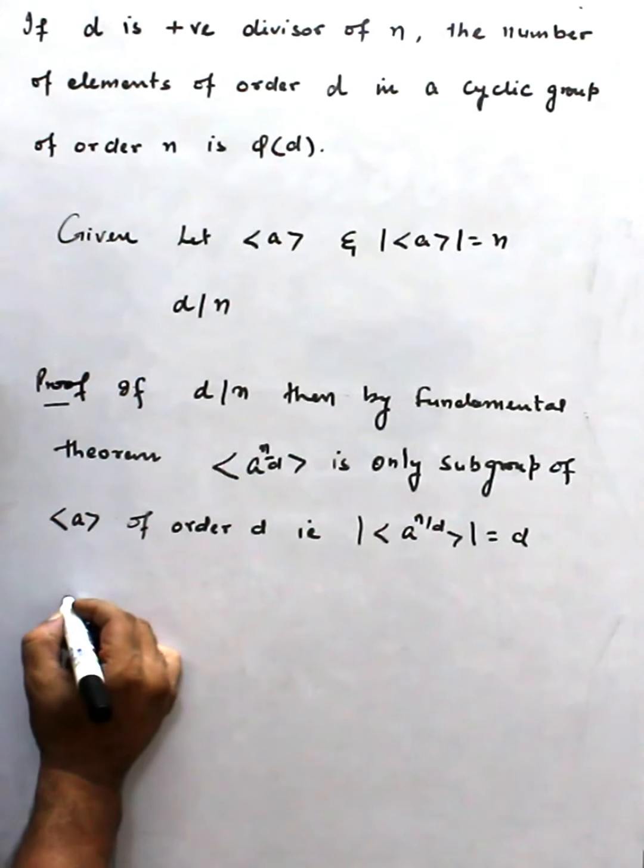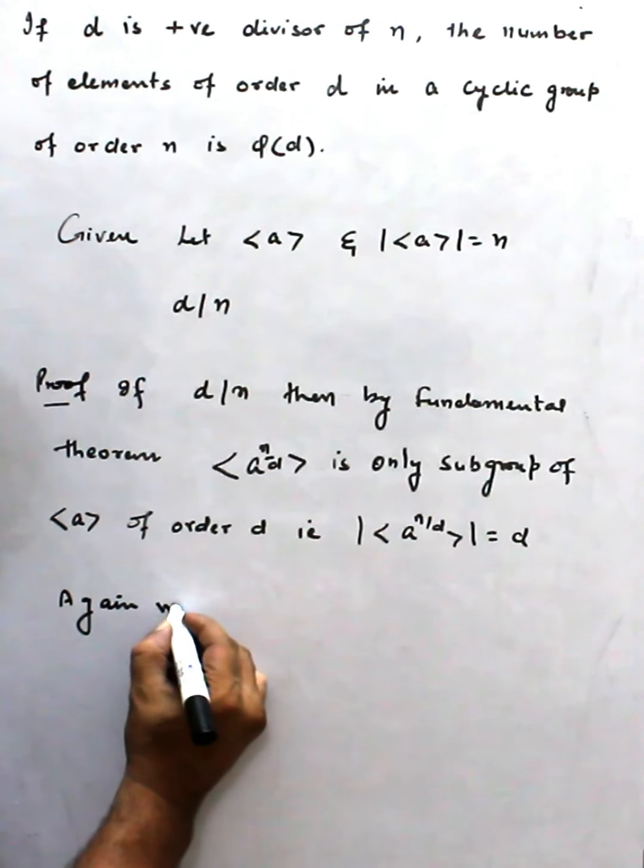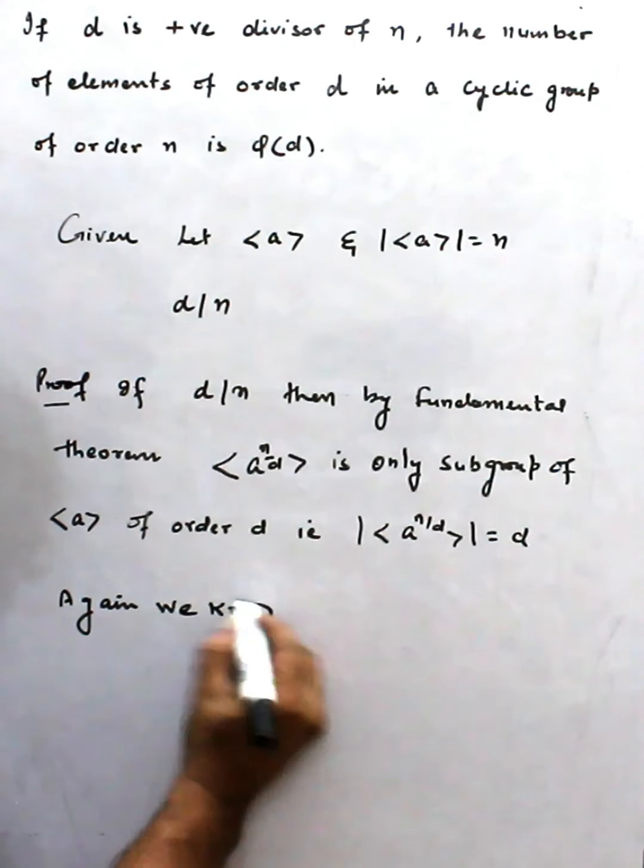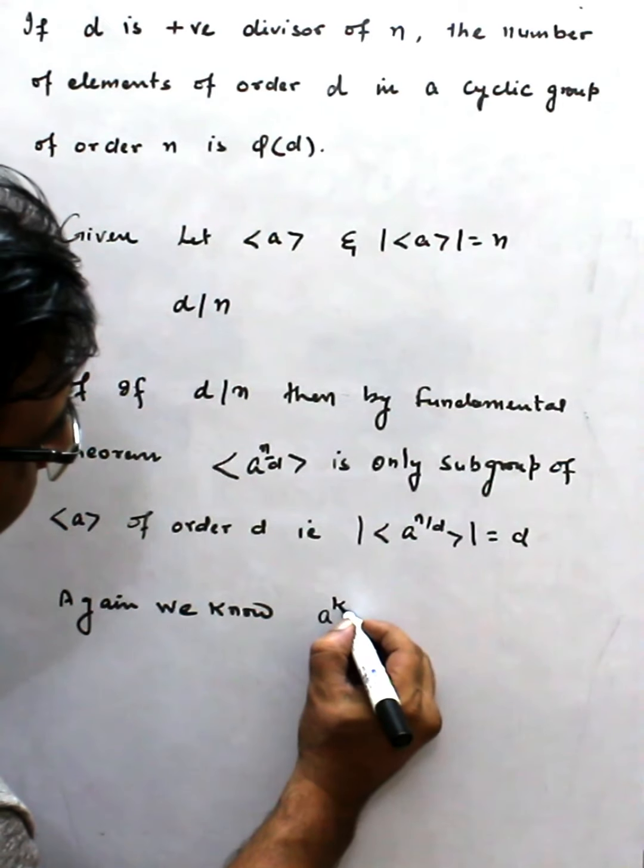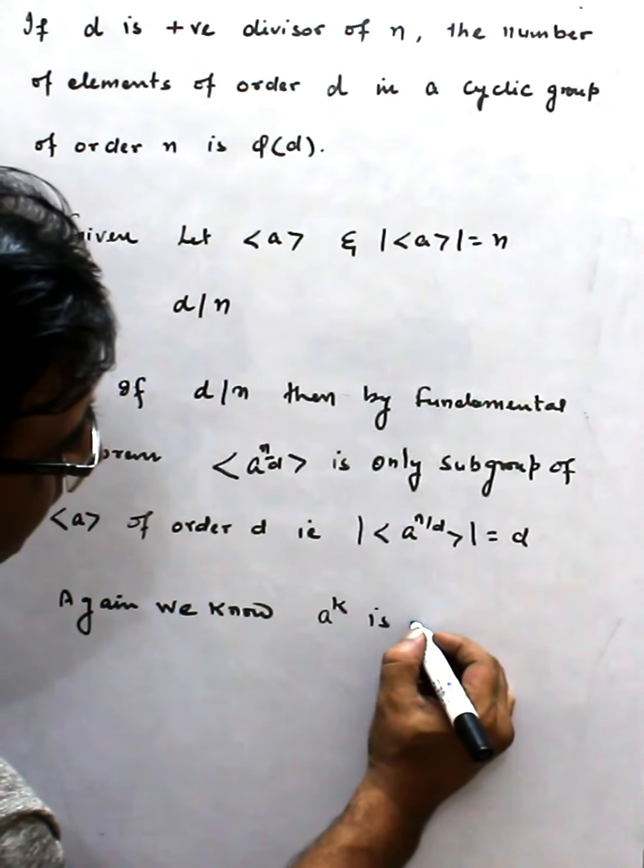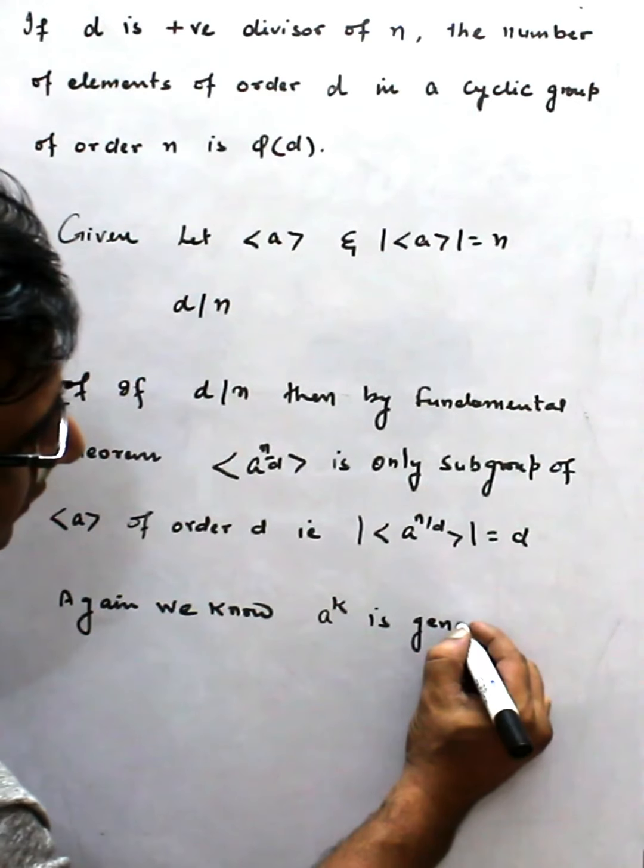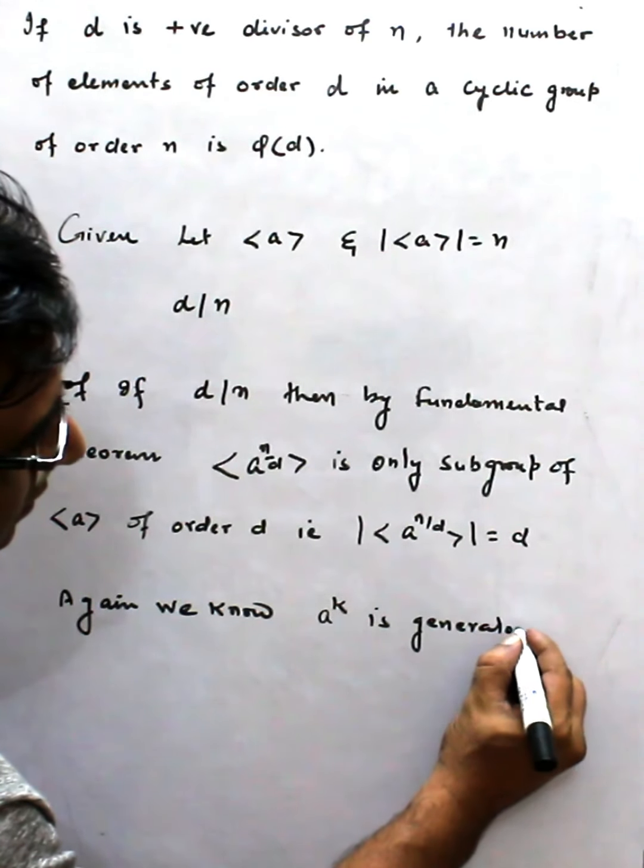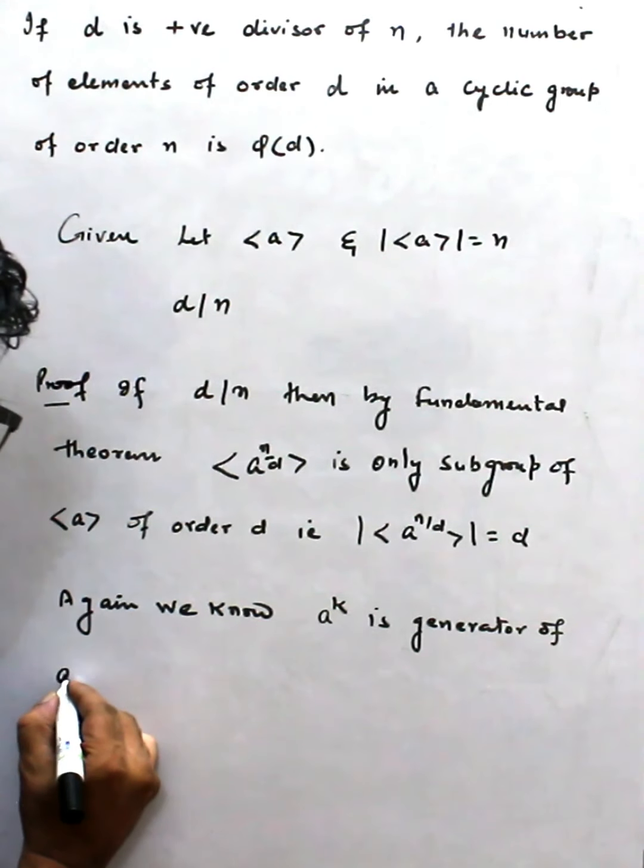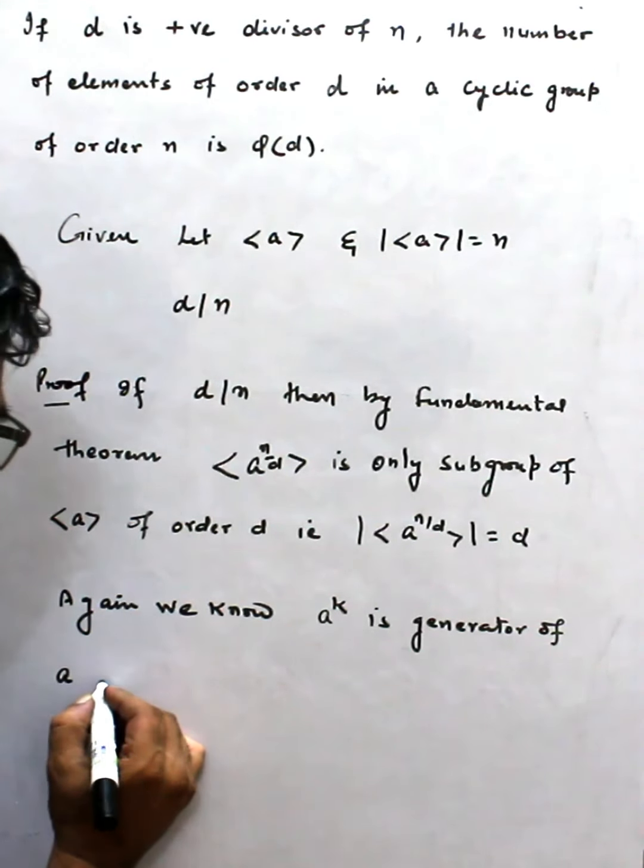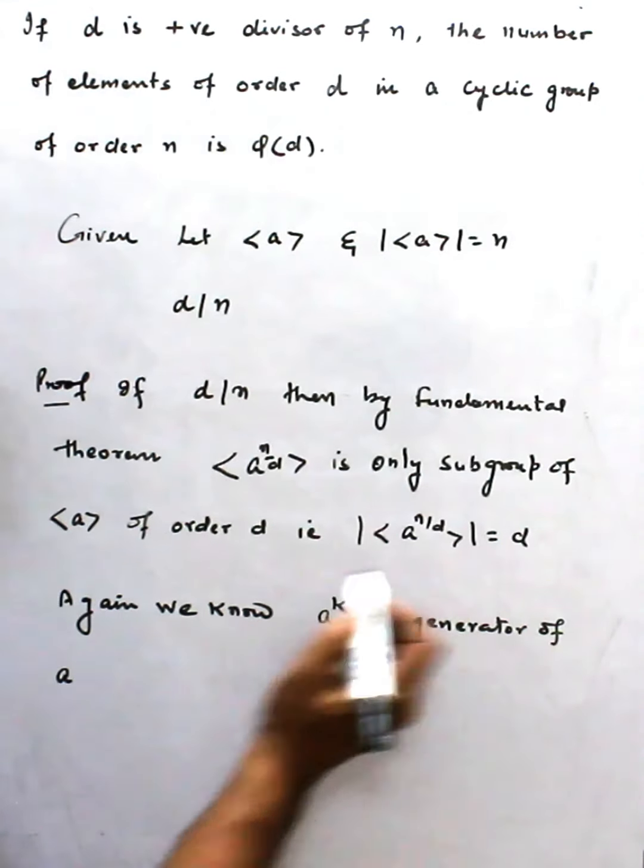We know a^k is another generator of a group or subgroup, because a subgroup is a group.